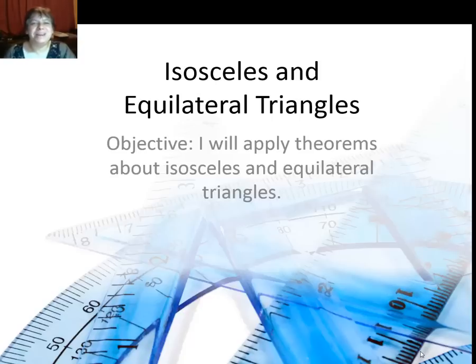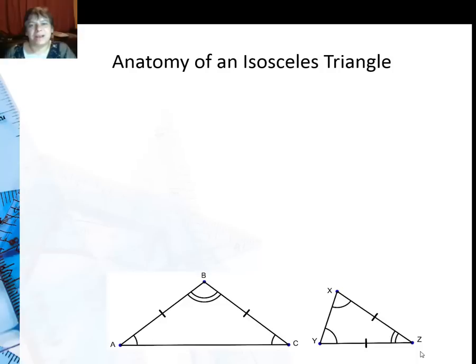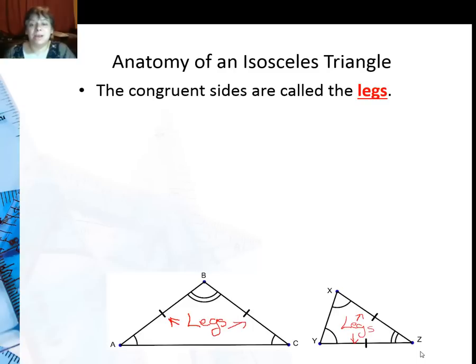So now we're looking at isosceles and equilateral triangles. The basic anatomy of an isosceles triangle are the congruent sides, that's what makes it isosceles, and those are called legs and they'll normally have the congruent marks there.